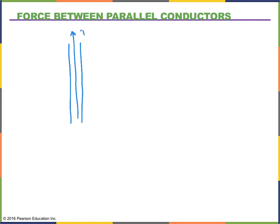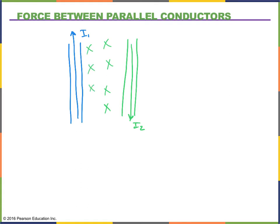Now let's look at the example where the currents travel in opposite directions. I'll keep wire one going up and make wire two go down. This time I'll look at the magnetic field created by wire number two. If I point my thumb down and look at how my fingers curl, to the left of wire number two my fingers curl into the page — I'll draw X's to represent that magnetic field. To the right of wire number two my fingers come out of the page.